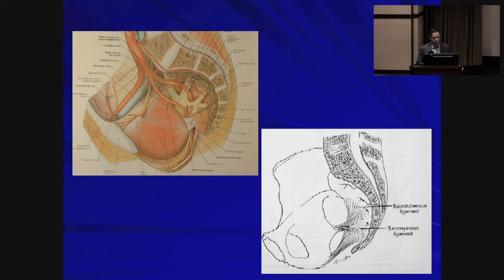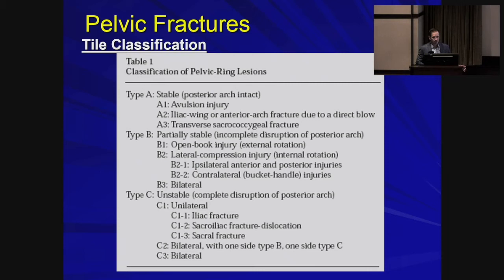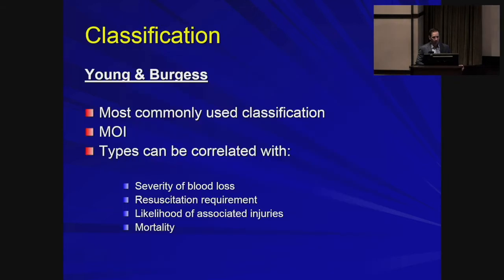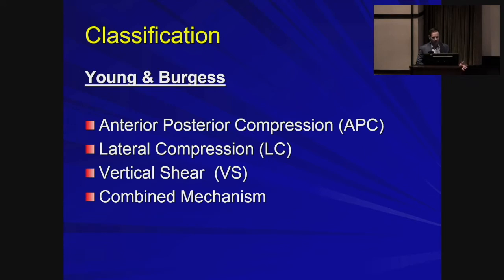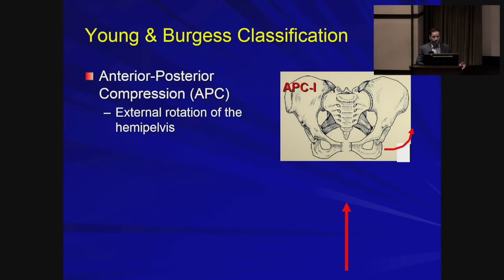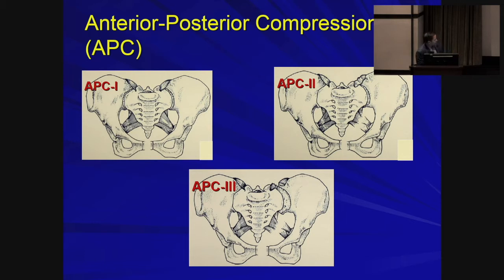There are various classifications for pelvic fractures. The more popular one we use is the Young and Burgess classification — a simple system where subtypes are named by mechanism of injury, and one classification correlates with severity of blood loss and mortality. The first subtype is anterior-posterior compression (APC): force imparted anteriorly to posteriorly, such as a head-on collision, causing external rotation of the hemipelvis and widening — the open book pelvis fracture. As energy increases, you go from simple front disruption to ligament tearing to complete hemipelvis dissociation.